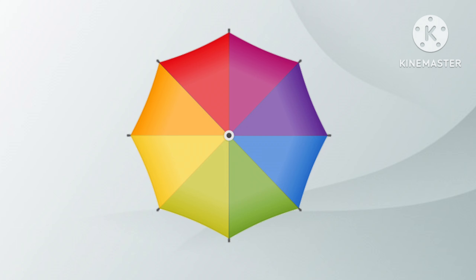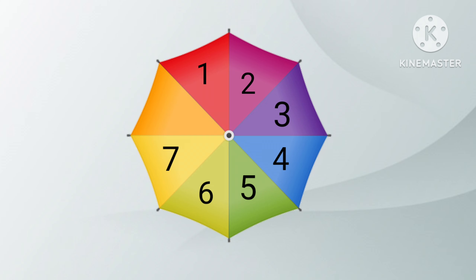How many colors are there? Shall we count? One, two, three, four, five, six, seven, eight. Eight colors.